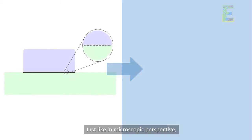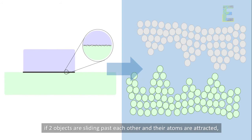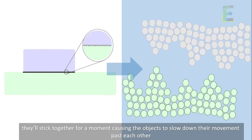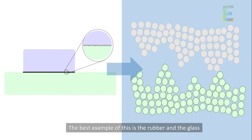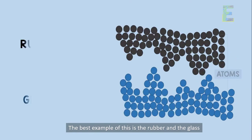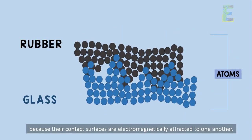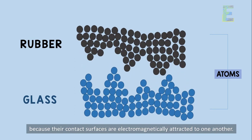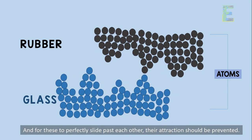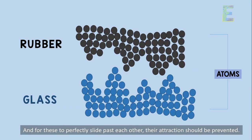Just like in a microscopic perspective, if two objects are sliding past each other and their atoms are attracted, they'll stick together for a moment, causing the objects to slow down their movement past each other. The best example of this is rubber and glass. It is difficult to drag rubber on glass because their contact surfaces are electromagnetically attracted to one another, and for them to perfectly slide past each other, their attraction should be prevented.